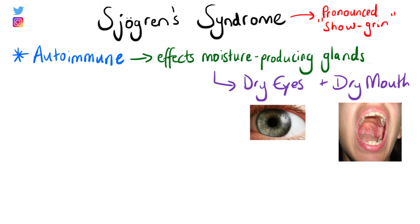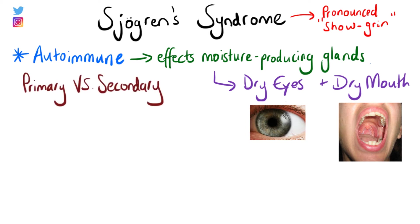We can classify Sjogren's syndrome into primary and secondary. Primary is where it is the only cause of the symptoms being present, whereas secondary Sjogren's syndrome usually occurs alongside another autoimmune disease.